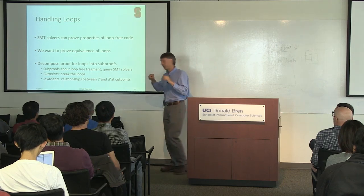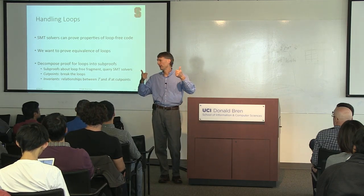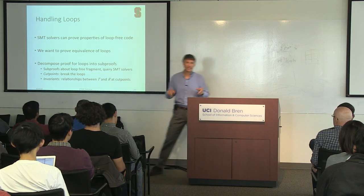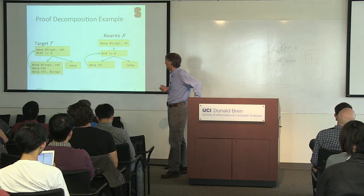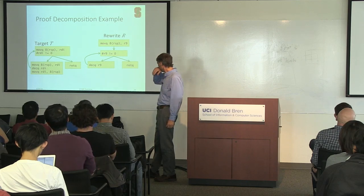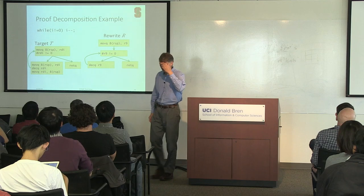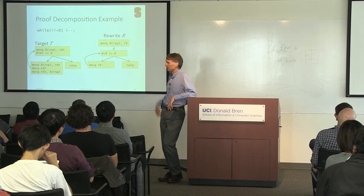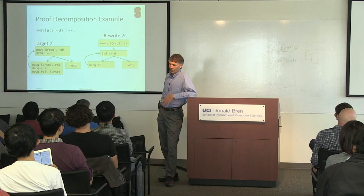We need a concept called a cut point from hardware reasoning. It's a pair of points — one in each program — that correspond to each other. We have invariants, relationships between the two programs at the cut points. Here's a little example program that decrements an integer to zero: one version does all the work in memory, the other caches a value in a register. We want to prove these two are equal.